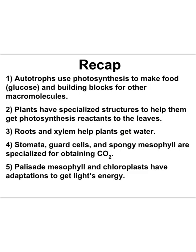Plants are able to get water because they have specialized roots and a specialized transport system called xylem. Plants are really good at getting carbon dioxide because they have specializations like stomata, guard cells, and spongy mesophyll. Finally, plants efficiently capture energy from sunlight because they have palisade mesophyll at the upper part of their leaves, rich in chloroplasts — and chloroplasts have special adaptations of their own. I can't wait to dive into all of the particulars of photosynthesis with you. Let's go!